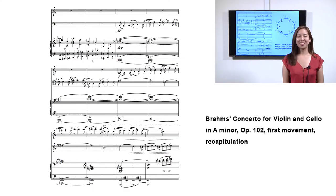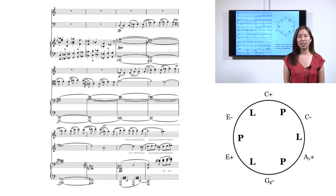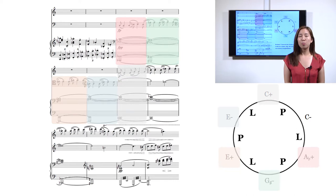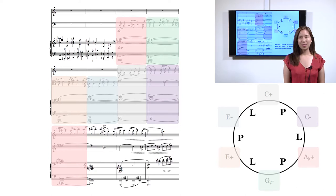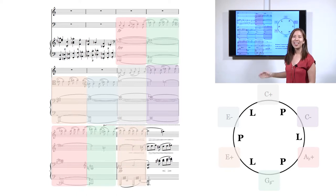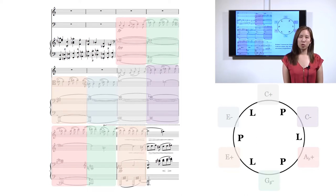The passage that Cohn cites is just before the recapitulation. Similarly, it begins with A flat major and goes through the P-L alternation. In fact, it is the same harmonic progression we analyzed in the previous slide. After returning to the starting point, in other words, the A flat major triad, it then moves to G sharp minor triad to prepare for the arrival of the cadential dominant seventh. You can click the audio button to listen to the triadic progressions in this passage.